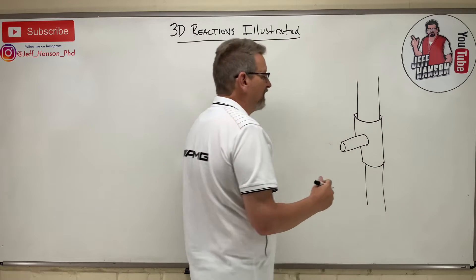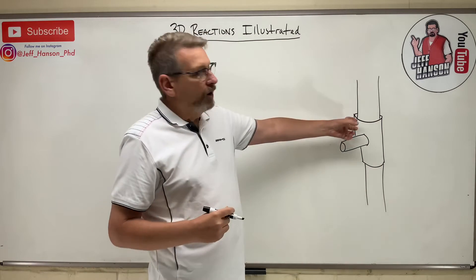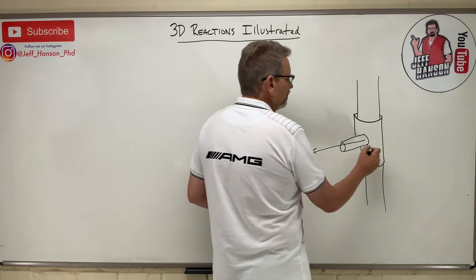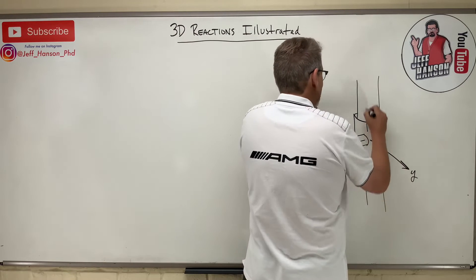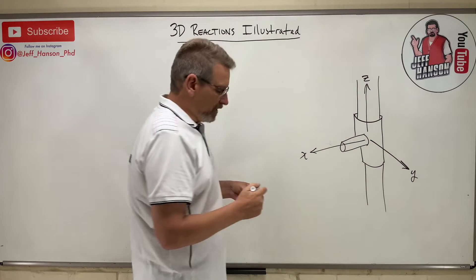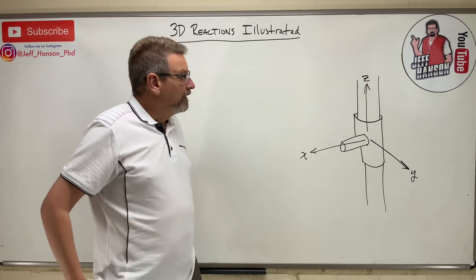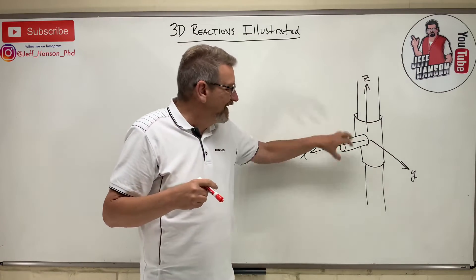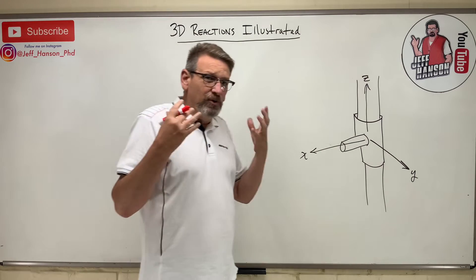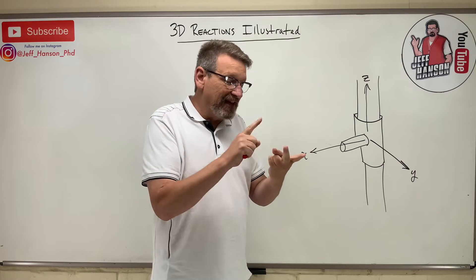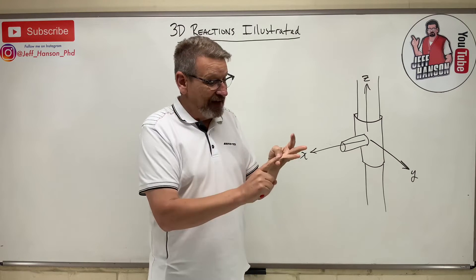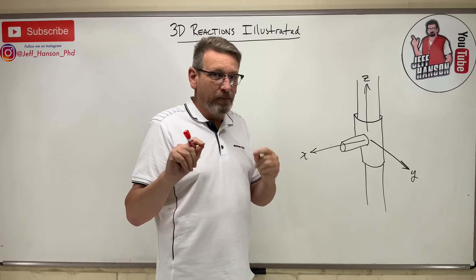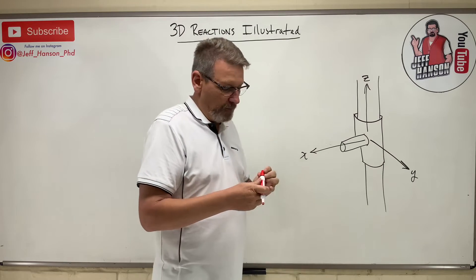So I've got a pipe — a smooth collar over another pipe — and I'm talking about this 3D connection. This connection has an X, a Y, and a Z direction. In 3D, you've got to ask yourself a few questions: Can I move it in the X? Can I move it in the Y? Can I move it in the Z? Can I spin it around the X, around the Y, around the Z? Every time you say no, you draw a reaction force.